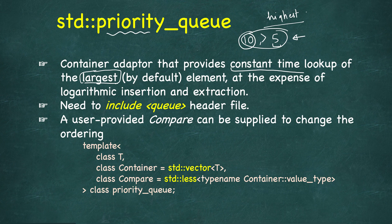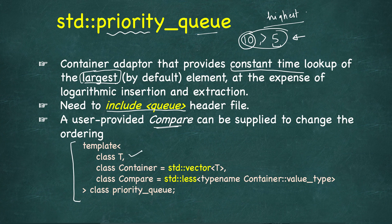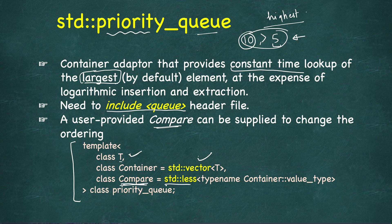Insertions and extractions are logarithmic time. You need to include the queue header, just like with queue. A user-provided compare can be supplied to determine priority. It's defined with a type for the data stored, an underlying container which defaults to a vector of the same type, and then the compare. If you don't provide anything, the default will be std::less, so larger values get higher priority.